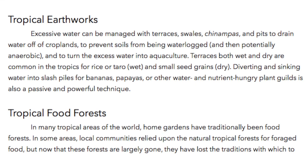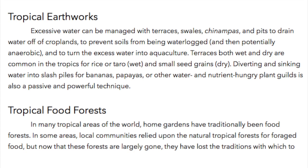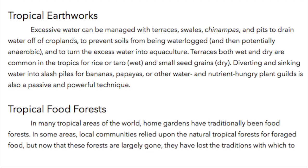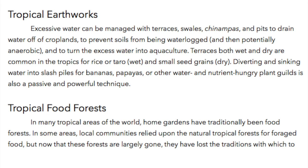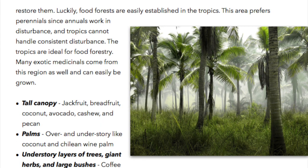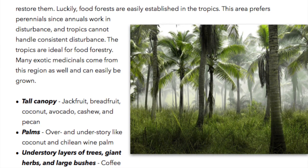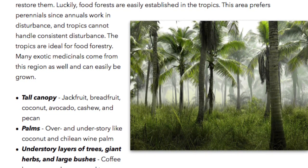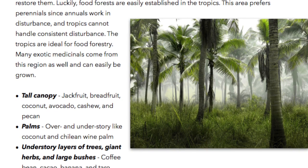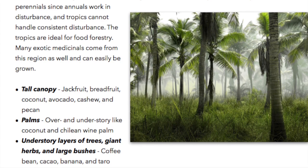Tropical Food Forests. In many tropical areas of the world, home gardens have traditionally been food forests. In some areas, local communities relied upon the natural tropical forests for foraged food. But now that these forests are largely gone, they have lost the traditions with which to restore them. Luckily, food forests are easily established in the tropics. This area prefers perennials since annuals work in disturbance, and tropics cannot handle consistent disturbance. The tropics are ideal for food forestry, and many exotic medicinals come from this region as well.